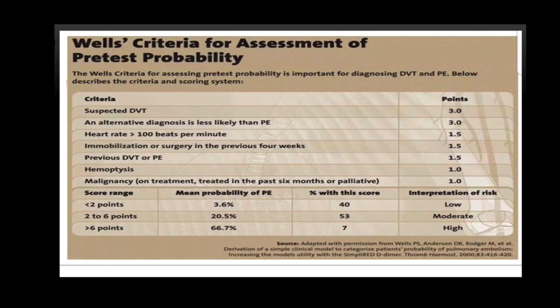Wells criteria for assessment of pretest probability: if the score is less than 2 points, the risk is low; 2 to 6 points indicates moderate risk; and more than 6 points indicates high risk. The criteria include suspected DVT and an alternative diagnosis less likely than PE, each carrying 3 points. Tachycardia with heart rate over 100, immobilization or surgery in the previous 4 weeks, and prior history of DVT or PE carry 1.5 points each. Haemoptysis and malignancy carry 1 point each.